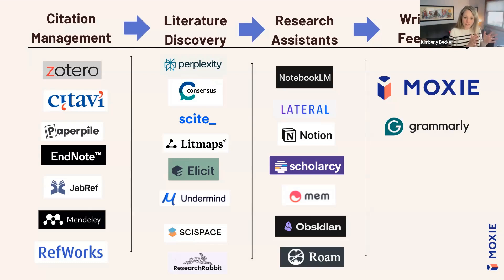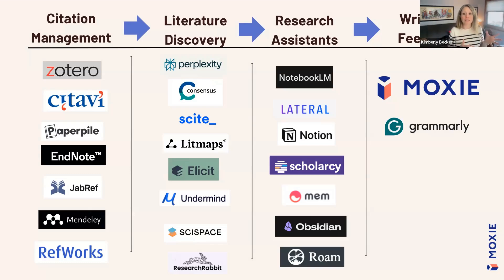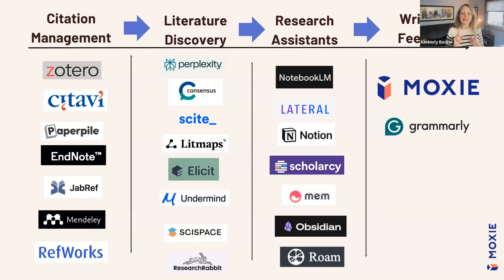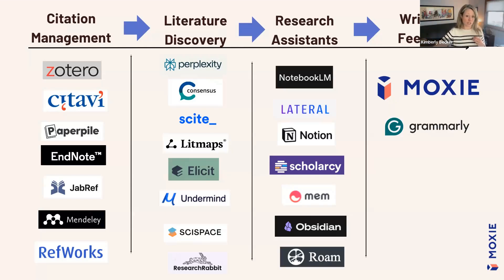Let's start on the left with citation management systems. These are ways that we organize the plants in our garden — collecting them, categorizing them, and nurturing them. Many universities provide one of these as a free resource through the library, and this is going to go with you throughout your career if you're going to continue being a researcher.